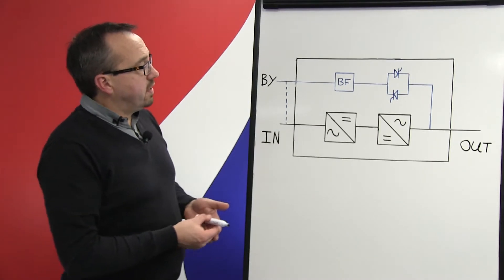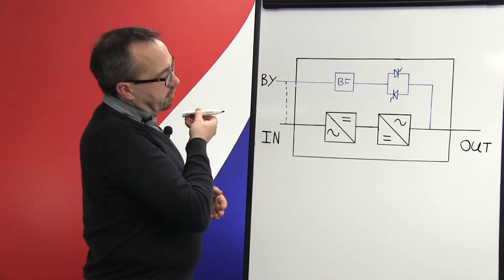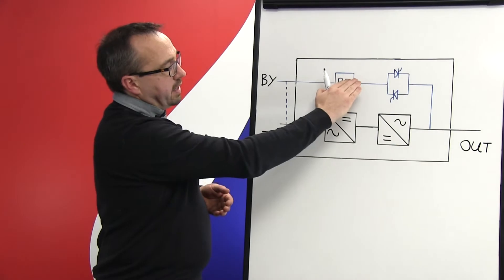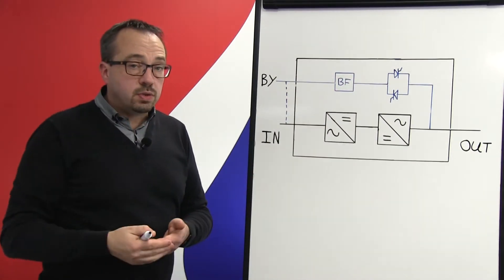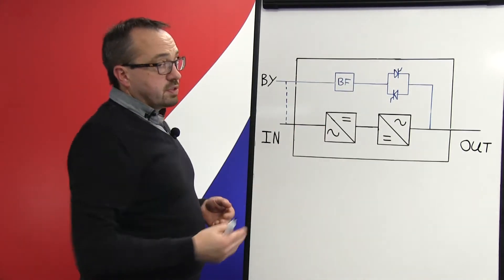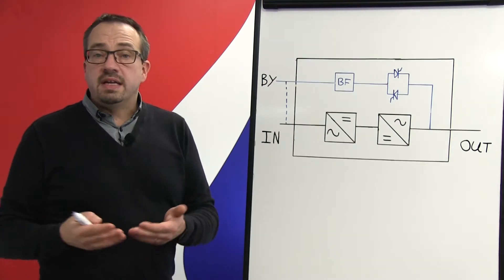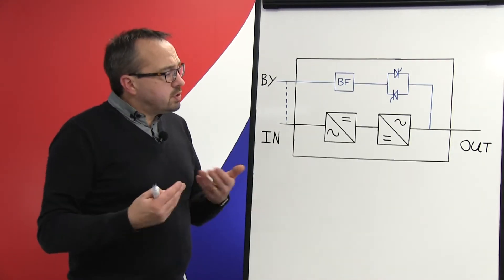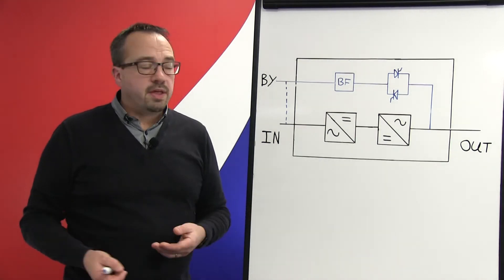Then effectively there are two supplies coming into the UPS system, and therefore the bypass supply here is on its own dedicated source and the rectifier is also on its own dedicated source, hence the term dual input. In terms of resilience, the dual input option is the preferred method.